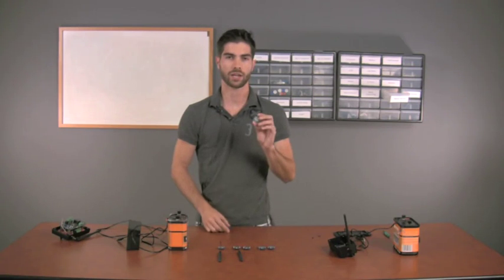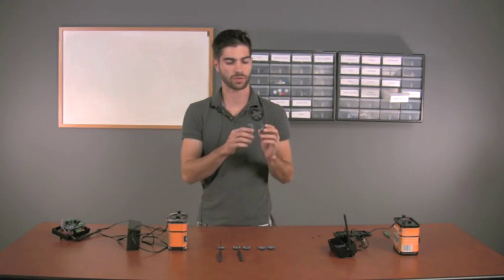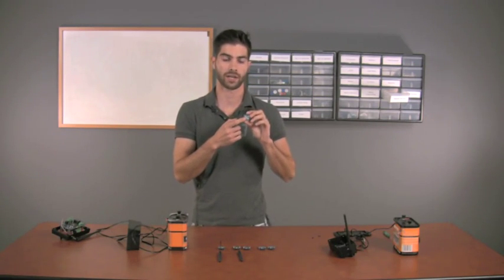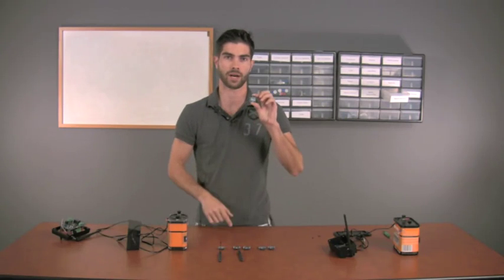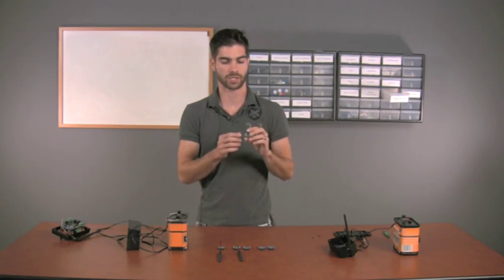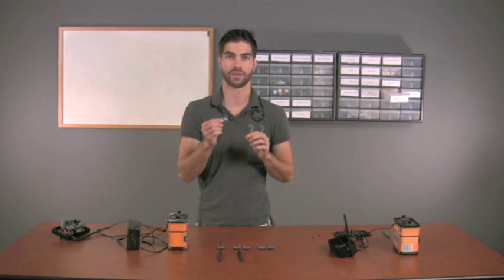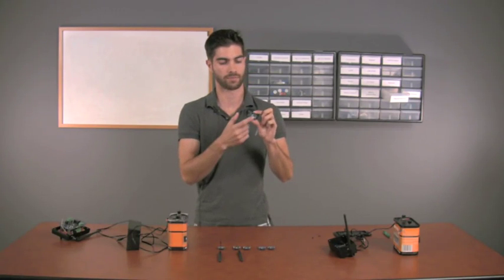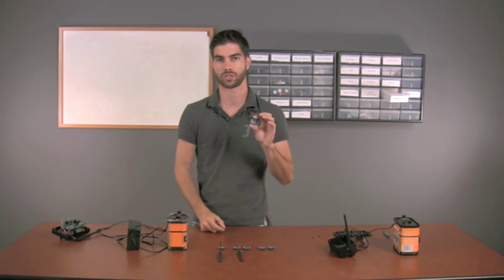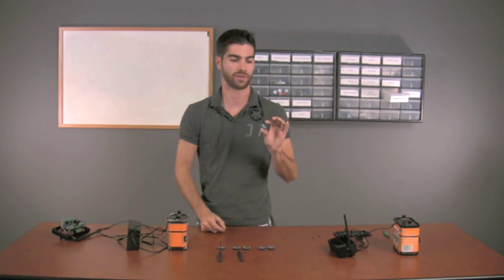So, with these 802.15.4 modules, I'm using a one milliwatt internal antenna module. This is what we say whenever we say 300-foot range. This is what the manufacturer suggests as a 300-foot range.